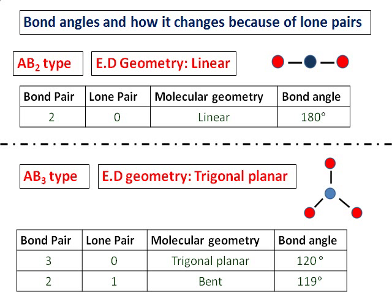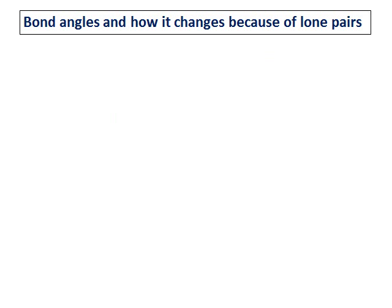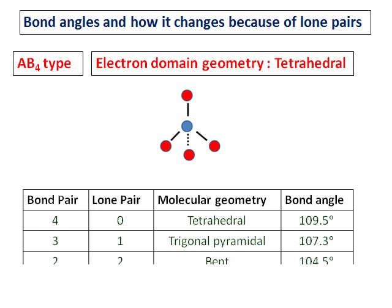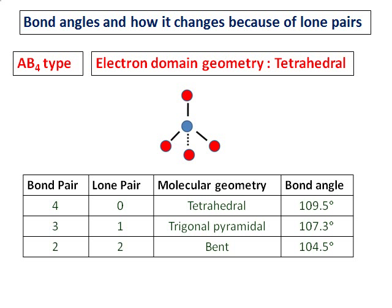It is necessary that you learn the bond angles of the electron domain geometry where there is no lone pair. The next type is AB4. The electron domain geometry for AB4 is tetrahedral, as shown. When there is no lone pair, the molecular geometry is also tetrahedral and the bond angle is 109.5 degrees. You need to remember this bond angle.